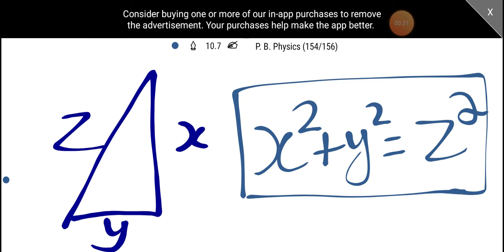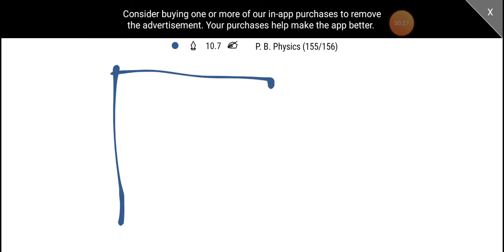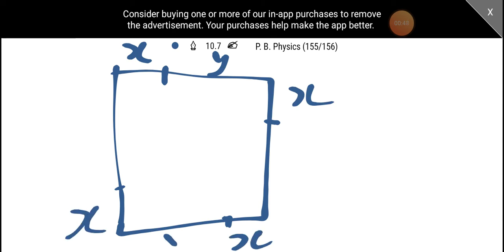I will show you the proof. I will draw the square. Now, the square has sides x and y. Now, this is x, and this is y.